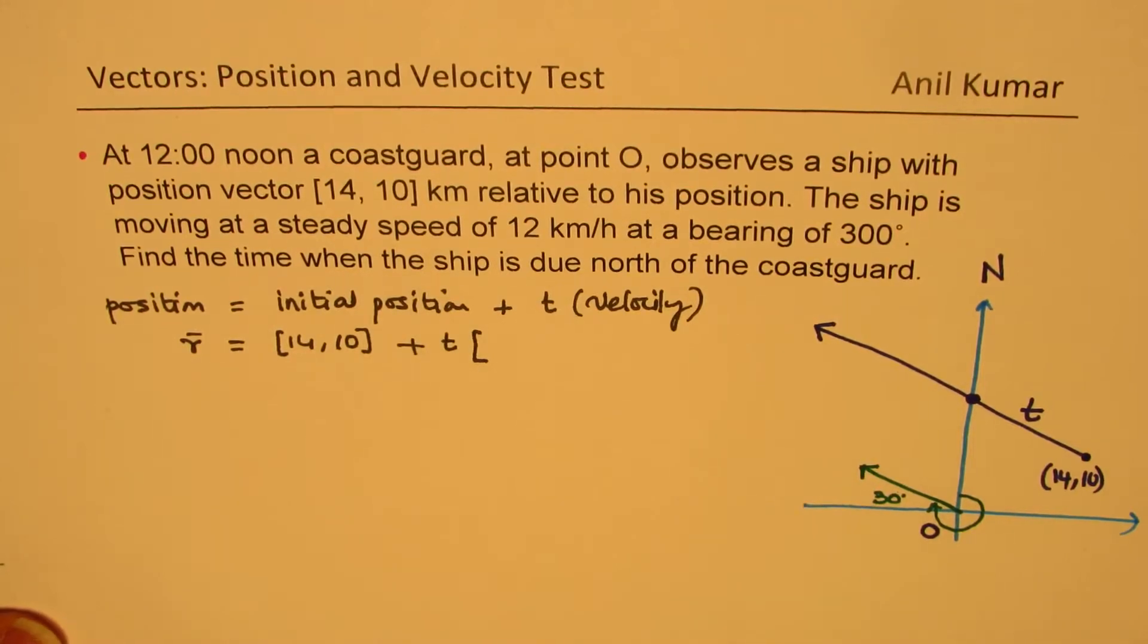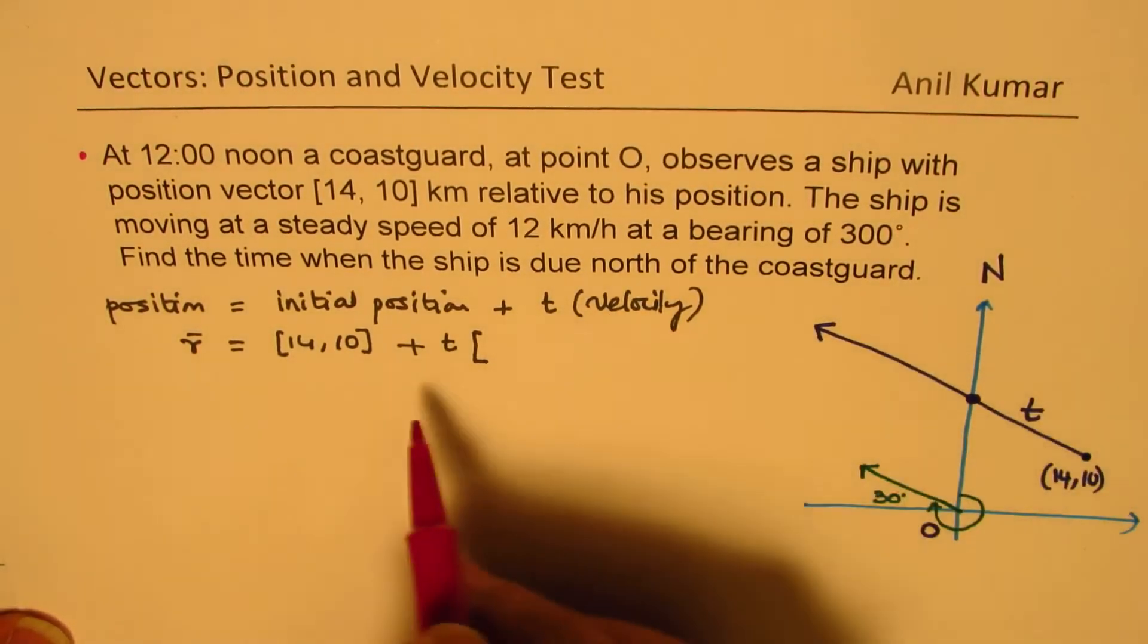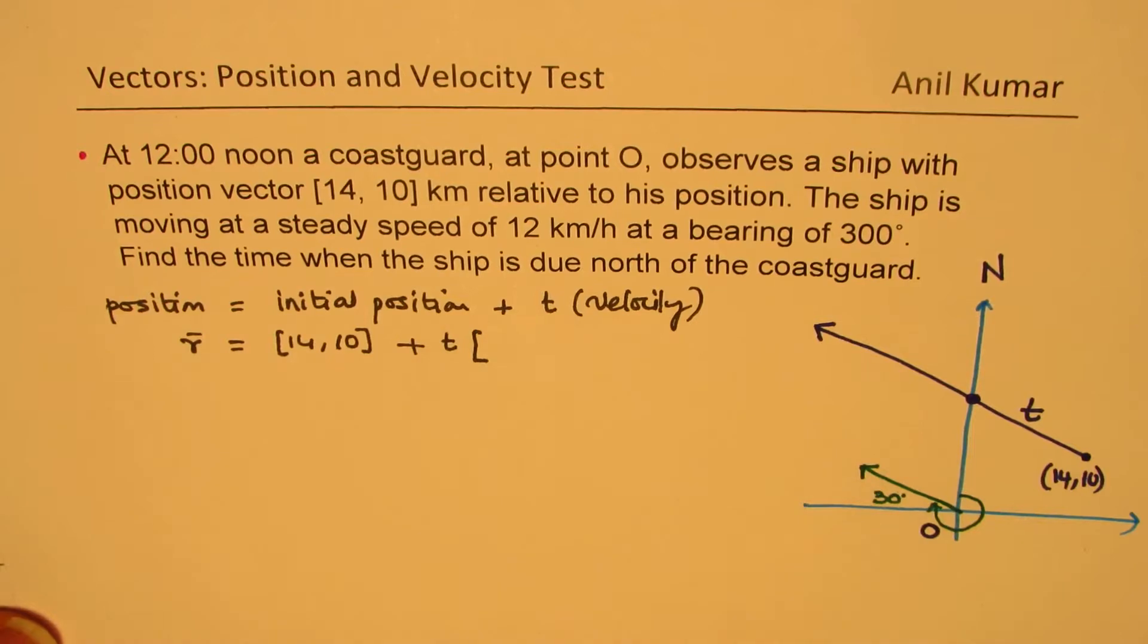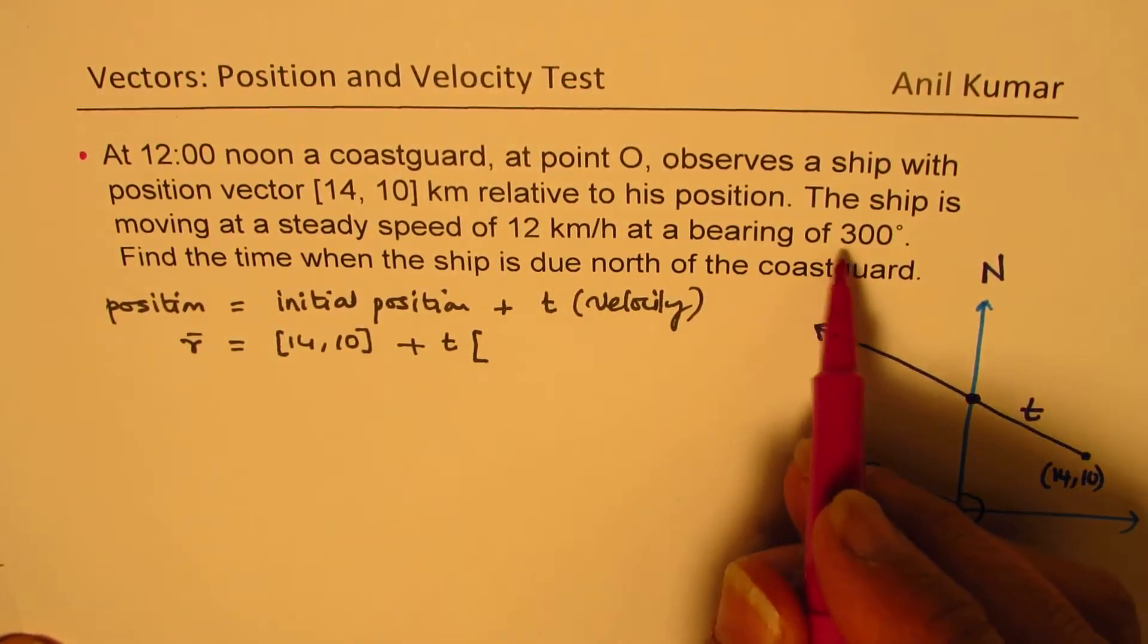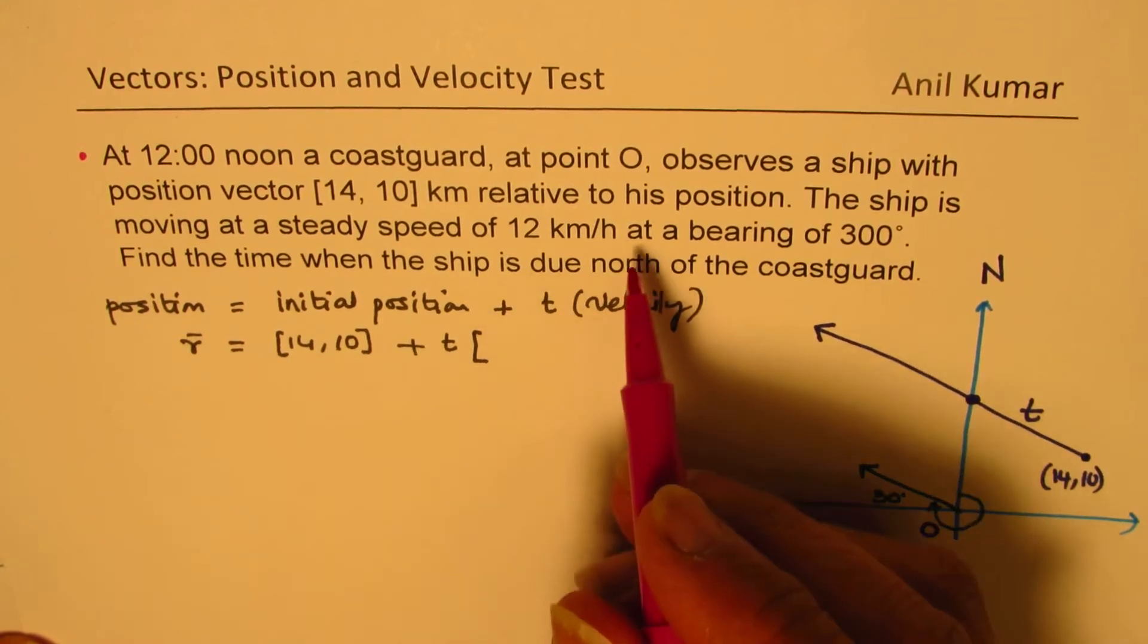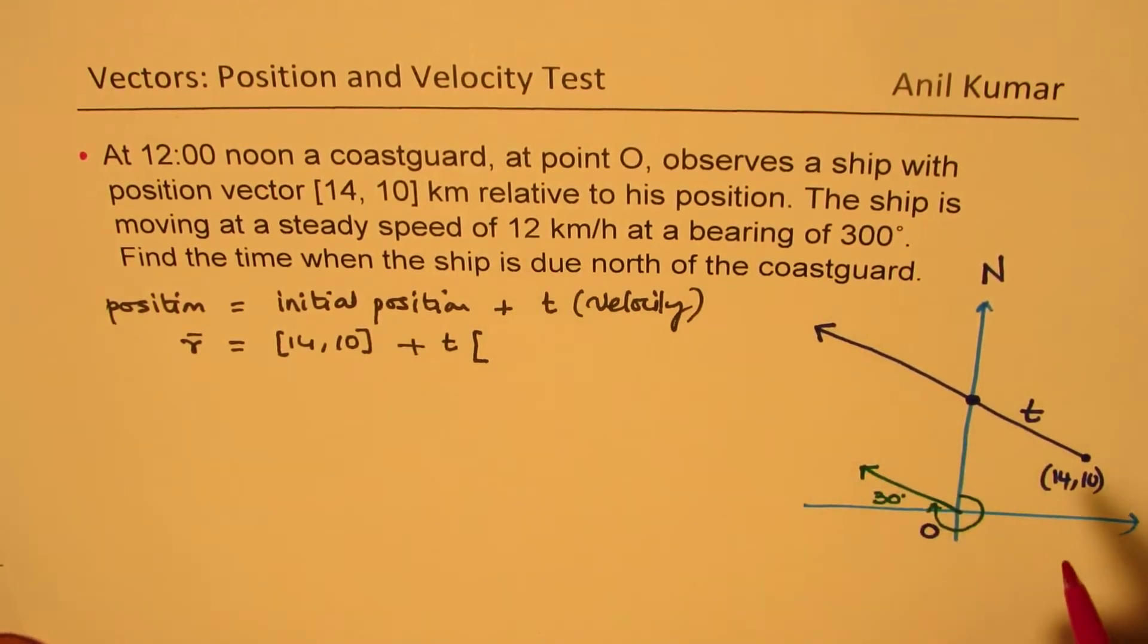We did this just now. Let's redo. We'll fill this up and then get our time and the solution. We need to convert 12 kilometers per hour at a bearing of 300. Let's write this vector.